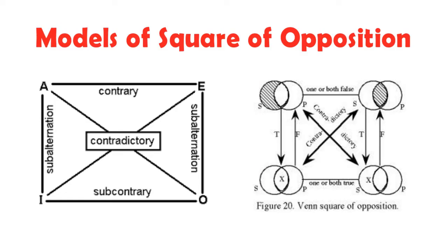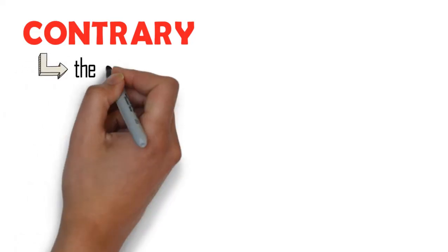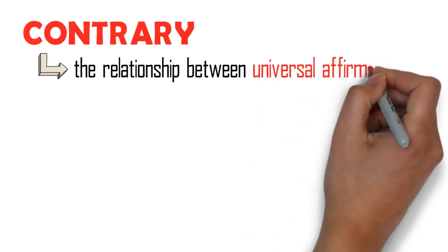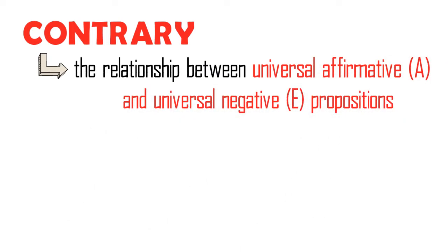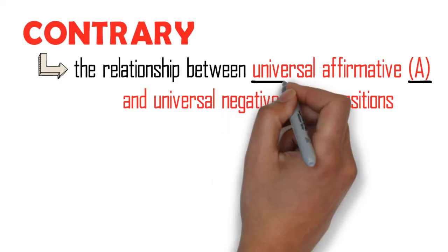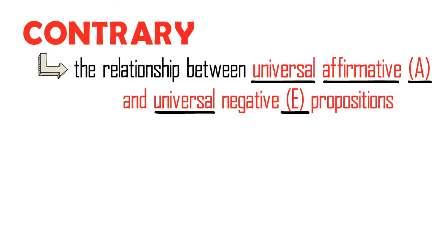Now, let's proceed in discussing the first type of relation in the square of opposition, that is, contrary. Contrary is the relationship between universal affirmative and universal negative propositions. Hence, there is only one pair in contrary, that is, A and E. And the pair differs only in quality. As we can see, both are universal propositions, but one is affirmative and the other negative.